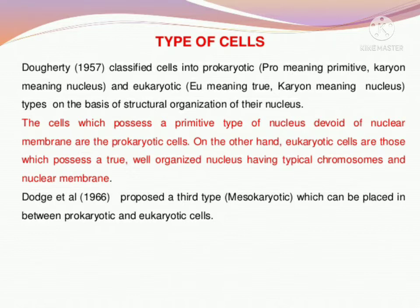So this is the major difference. 'Pro' means before, 'karyo' means nucleus. The organisms that existed on Earth before the nucleus formed — we call them prokaryotic organisms. Because in them the nuclear membrane is absent, meaning no nucleus is visible. So their genetic material lies in the cytoplasm of the cell. Those cells we call prokaryotic cells.